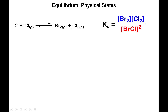Since the balancing coefficient of both Br₂ and Cl₂ is one, each is raised to the first power — understood but not required to write. The reactant BrCl has a balancing coefficient of two, so you have [BrCl]² in the denominator.